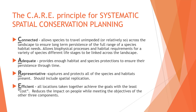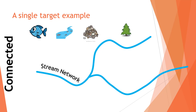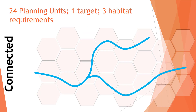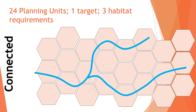Now let's take a look at an example. If we consider a hypothetical example where we are interested in the conservation of an aquatic system, you see that we have a single target — suitable spawning substrate — and protected riparian areas all along a stream network. In conservation planning, we need to break the landscape up into some definable spatial unit. Here you see hexagons, but this can also be represented by watersheds. In this example, we have 24 planning units, one target species, and three habitat requirements.